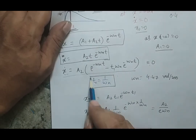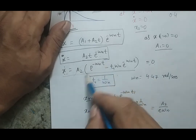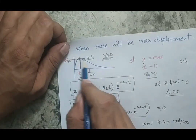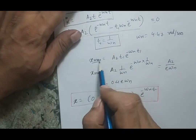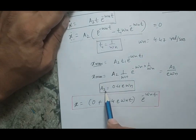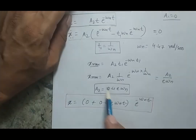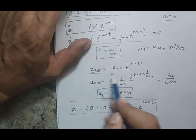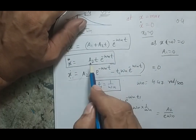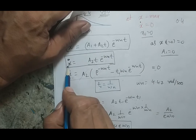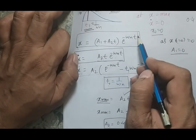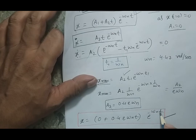From t₁ = 1/ωₙ and x_max = 0.4, I can find a2. Since a1 = 0 and a2 = 0.4·e·ωₙ, and using x_max = a2·t₁·e^(−ωₙt₁), putting in 0.4 gives the unknown a2 value. Placing all values together gives the complete response expression for Case 2.